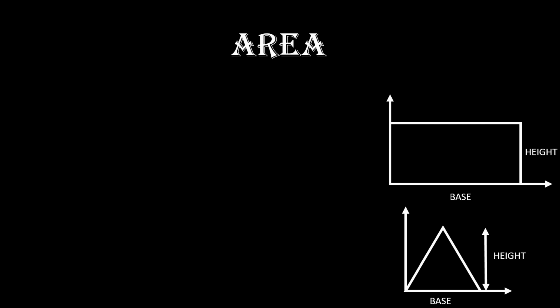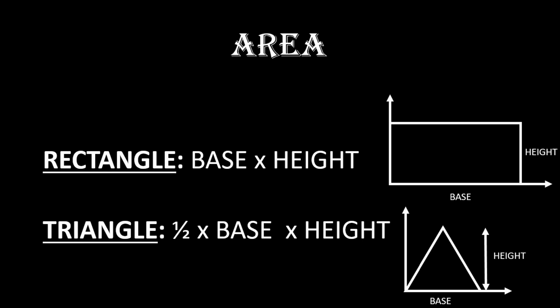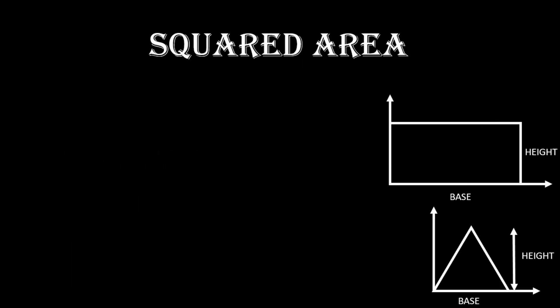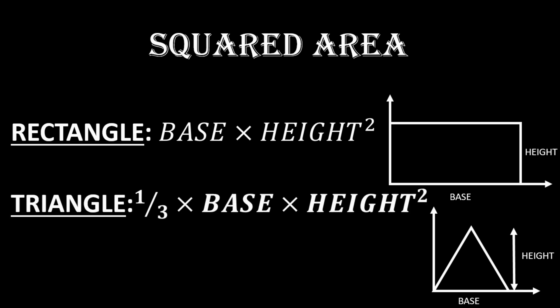Now, how will you calculate the area of standard wave shapes? For a rectangle, area equals base into height. For a triangle, area equals half into base into height. When you square a curve, the base does not change but the height will be squared. So the squared area of a rectangle is base into height squared, and the squared area of a triangle is one-third into base into height squared.